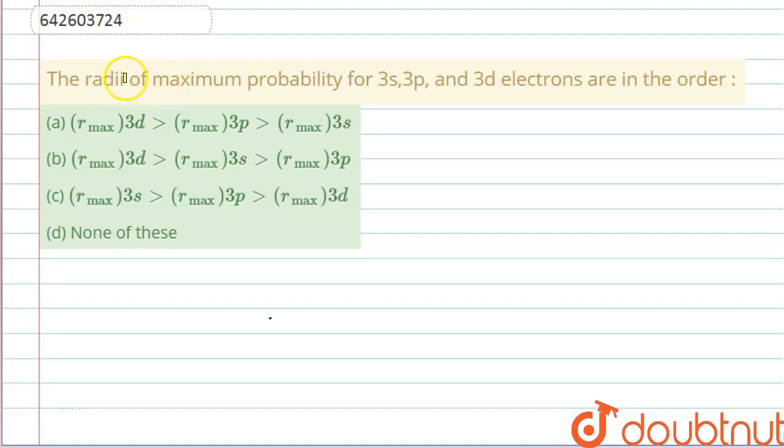Hello everyone, let's start this question. The question says the radii of maximum probability for 3s, 3p, and 3d electrons are in the order. Now we have to tell the radii of maximum probability of finding electrons. First thing is we are given the same value of n, that is the principal quantum number is 3.